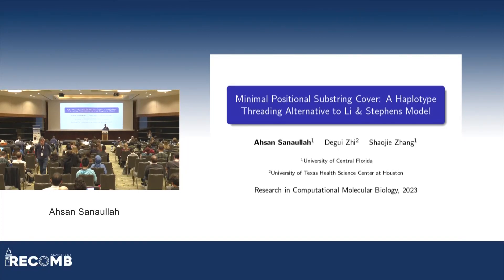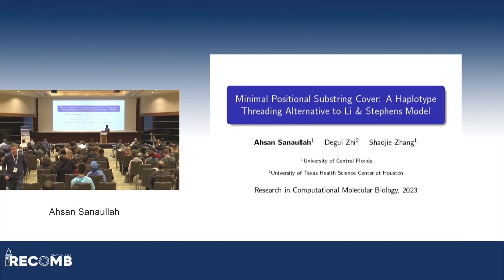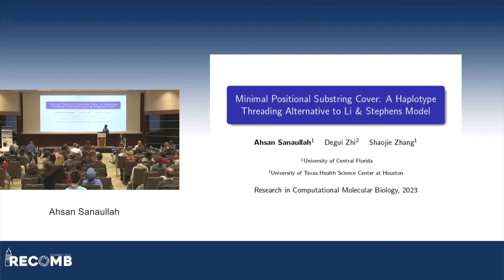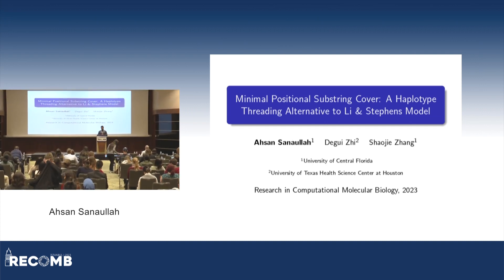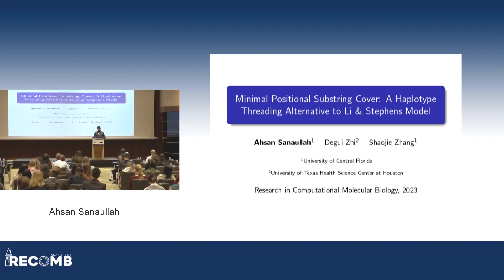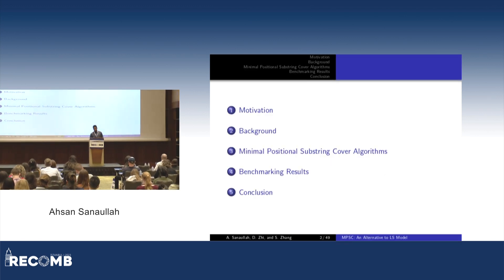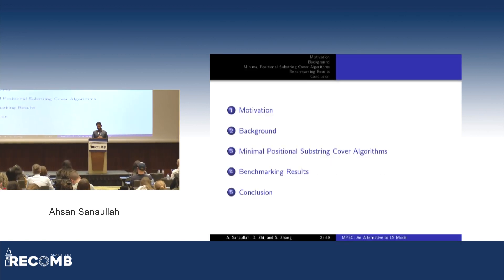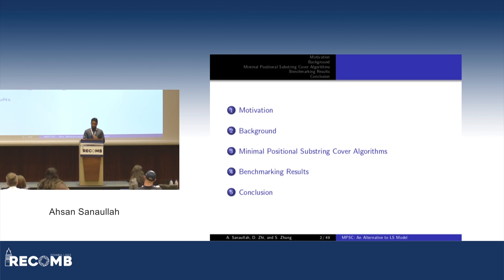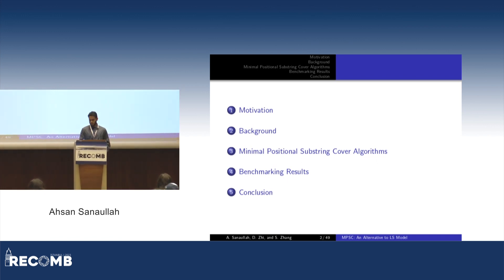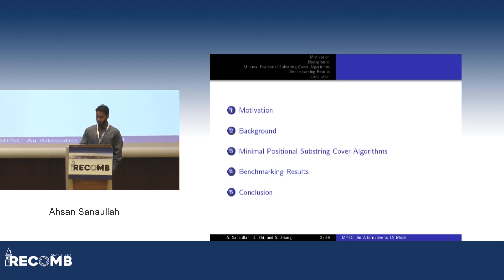Hello everyone. My name is Ahsan, and as Jin said, I'm presenting Minimal Positional Substring Cover, a haplotype threading alternative to the Li-Stevens model. We'll start with some biological background, then algorithm background for the problem, then the results of the paper, and finally conclude.